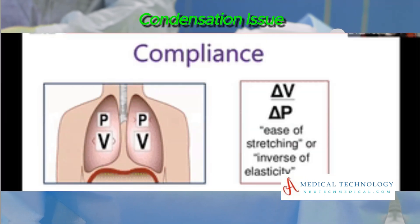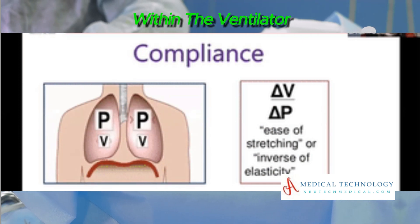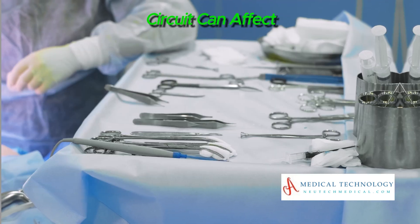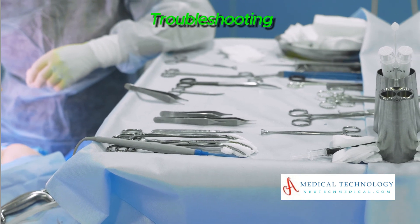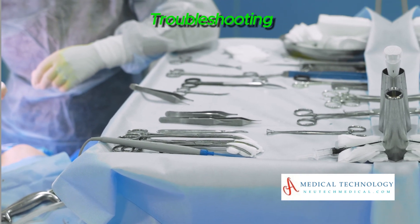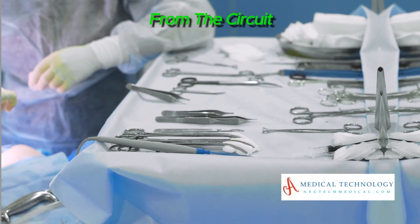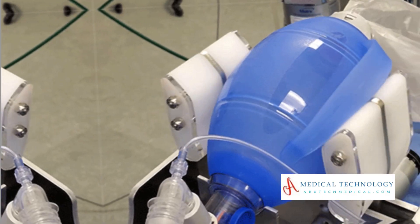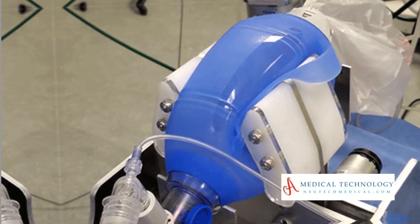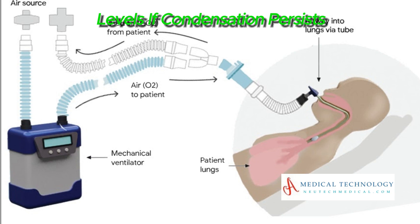Circuit Condensation — Issue: Condensation within the ventilator circuit can affect gas delivery. Troubleshooting: Drain condensation from the circuit, especially in humidified systems. Consider adjusting humidification levels if condensation persists.